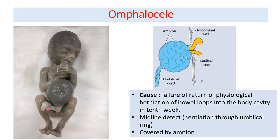The herniation occurs along the enlarged umbilical ring, making this a midline defect. Notice the relation of the umbilical cord — it is a midline defect. There is a covering around the herniated contents: this covering is the amnion. In omphalocele, the herniated contents are covered by amnion and the defect is positioned midline along the umbilical cord.